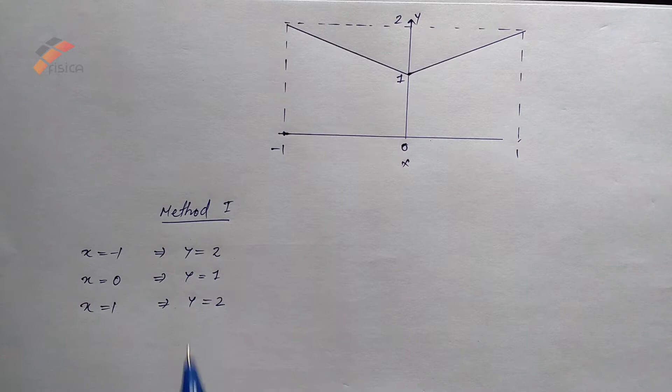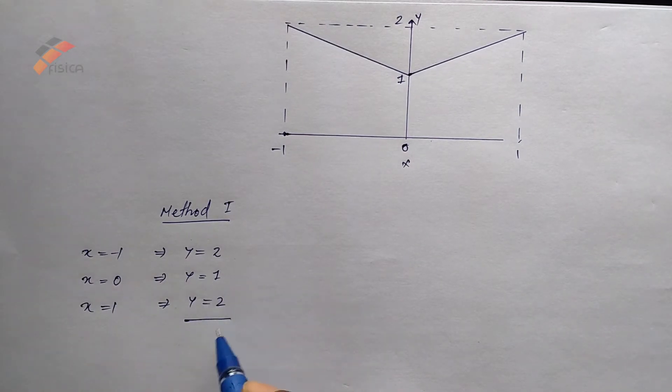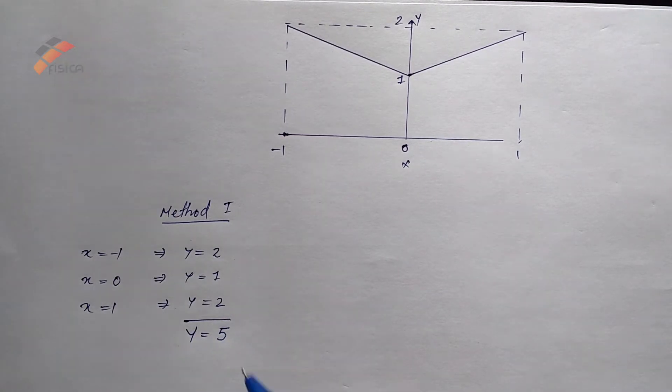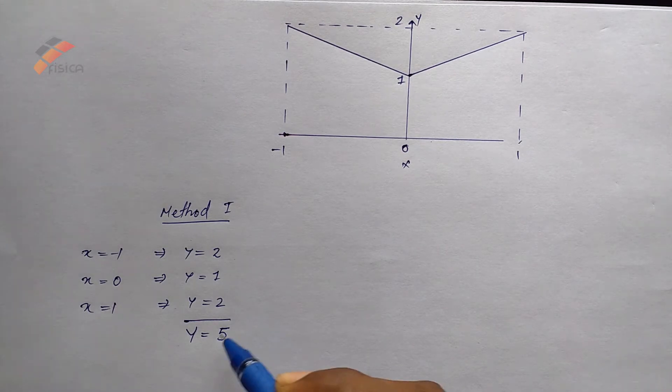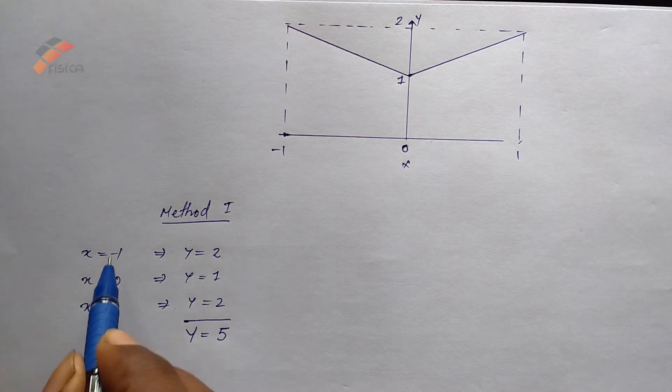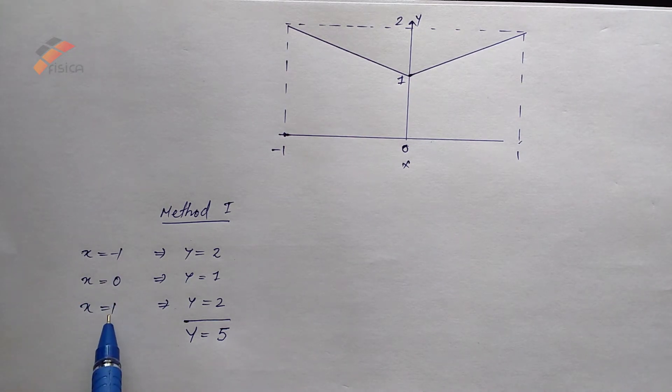So, the total value of y is 2 plus 1 plus 2, that is 5. This is the sum of values of y at three locations: x equal to minus 1, x equal to 0, x equal to 1.